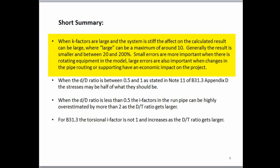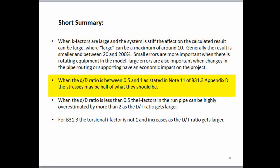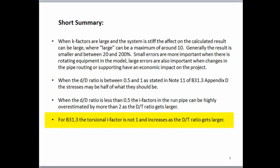We don't want to change pipe routing or supports when we don't have to. WRC 329 also pointed out that when the D over D ratio is between 0.5 and 1, as stated in Note 11 of B31-3 Appendix D, the CIFs may be half of what they should be, meaning the existing code calculation is too low by about two times. WRC 329 on page 22 noted that when the D over D ratio is less than 0.5, the I factors in the run pipe can be highly overestimated by up to about eight times as the D over T ratio gets larger. WRC 329 calls this condition 'obviously silly.' WRC 329 also pointed out that for B31-3, the torsional I factor is not 1 and increases as the D over T ratio gets larger, and that for size-on-size branch connections, the non-conservative error can be equal to about the out-of-plane I factor — the largest I factor that can exist at the intersection.